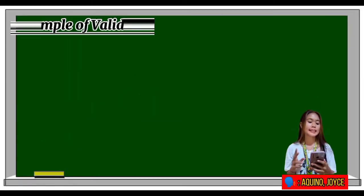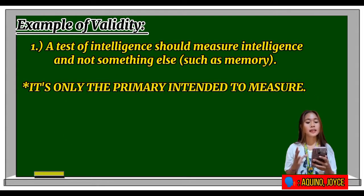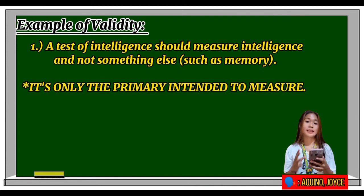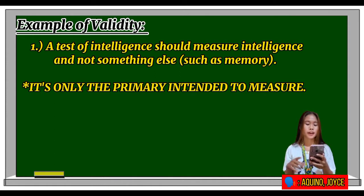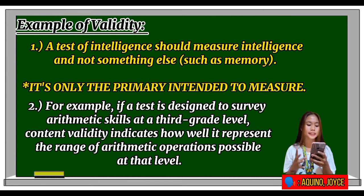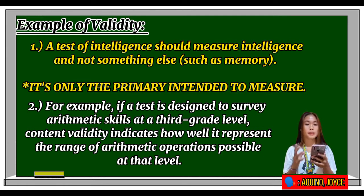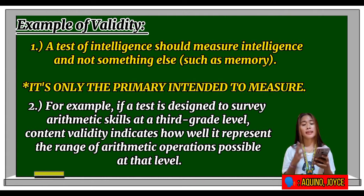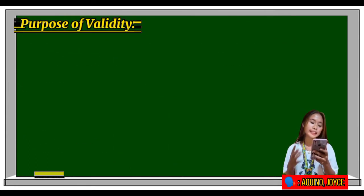Examples of validity: First, a test of intelligence should measure intelligence and not something else such as memory — it should only measure its primary intended construct. Second, if a test is designed to survey arithmetic skills at a third grade level, content validity indicates how well it represents the range of arithmetic operations possible at that level.